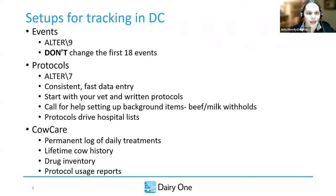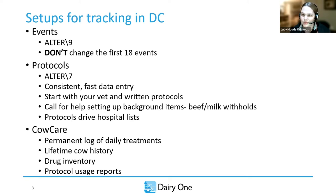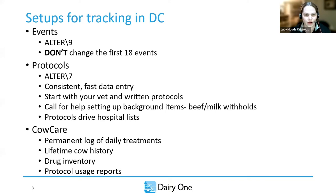For tracking in Dairy Comp, if you don't have the events you need, alter backslash nine gets you into the user-defined events. Please don't change the first 18 events — they are sacred to Dairy Comp. It won't yell at you, but it's a really bad idea to change them. There are hardwired pieces to the first 18 events and we cannot reuse them.